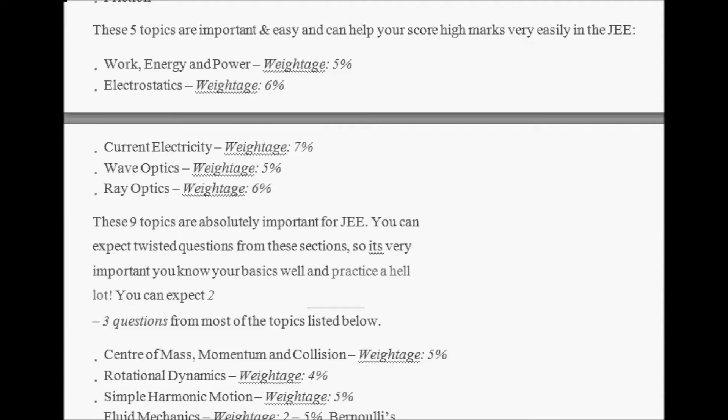The most important chapter is Current Electricity, whose weightage will be around 7%. Next is Wave Optics, weightage 5%. Then Ray Optics, again weightage 6%. Now these 9 topics are absolutely important for JEE. You can expect twisted questions from this section. So it's very important you know your basics well and practice a lot.